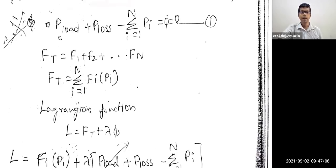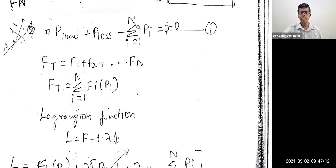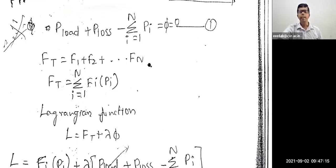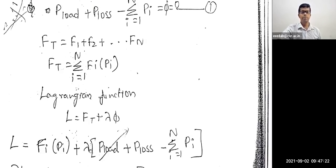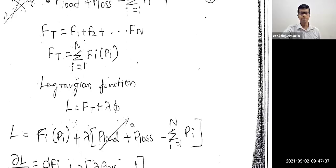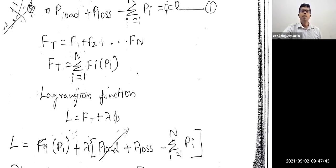So Lagrange's function is summation of F_i(P_i) plus lambda into the constraint: P_load plus P_loss minus summation i equals 1 to n of P_i. We are adding the constraints here. The objective function is to minimize the total fuel cost plus some lambda times the constraint. Similarly, as we did in the previous equation, we consider the load to be the maximum and neglect that term. Next, we differentiate the Lagrange's function and equate it to zero.